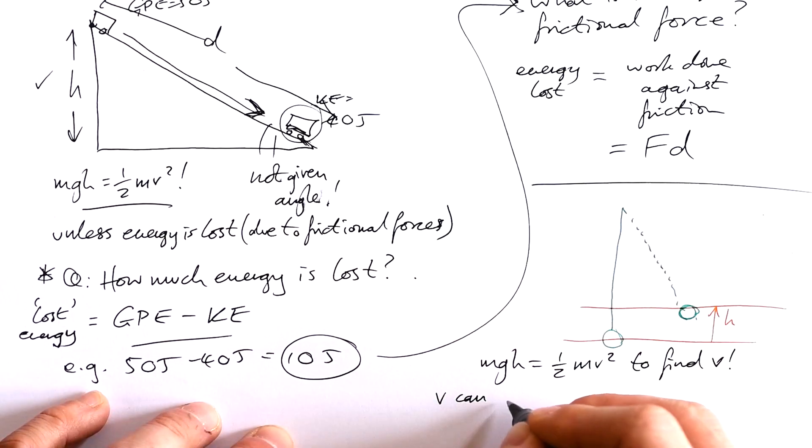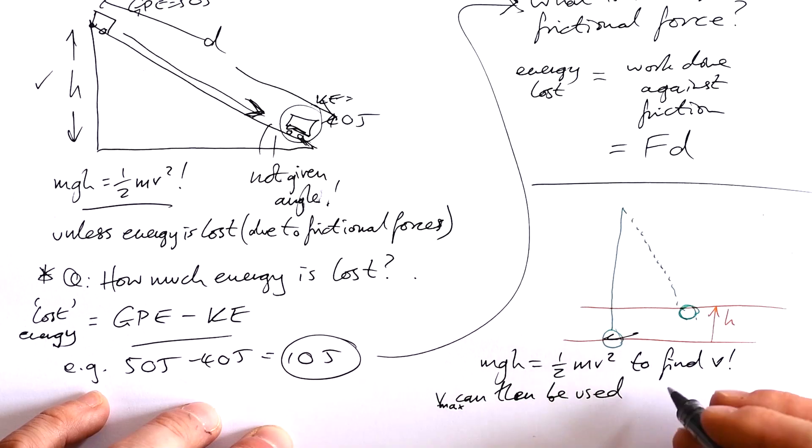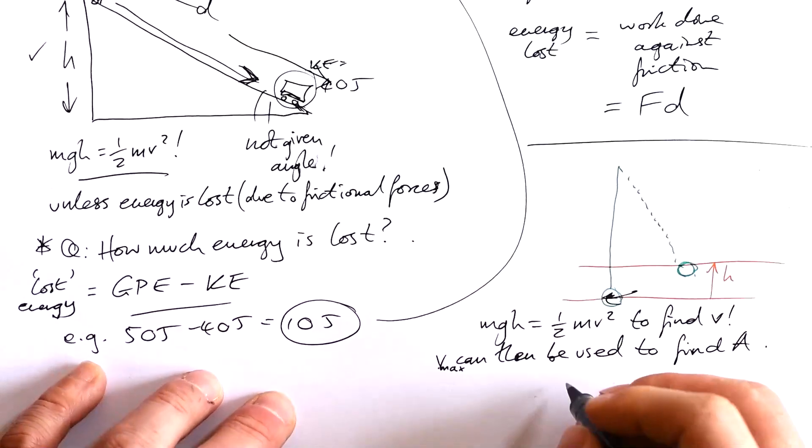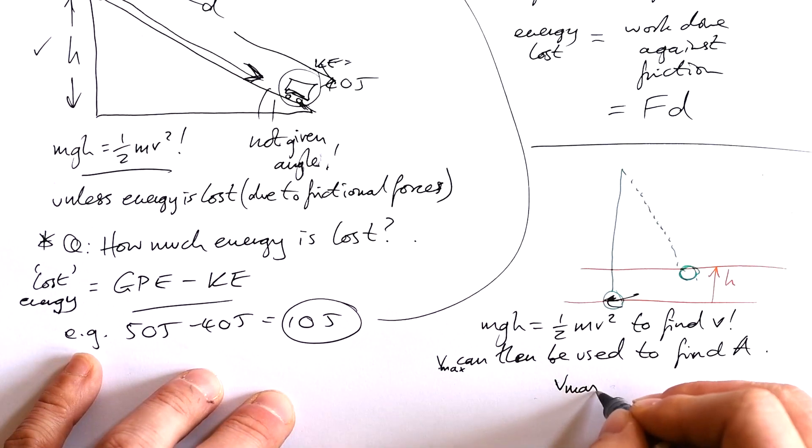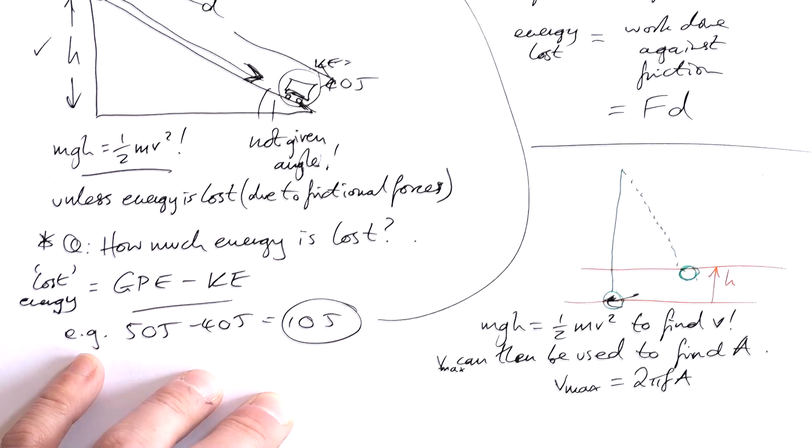V can then be used—and actually it's going to be V max, isn't it, because that's the speed at which it goes through equilibrium with. V max then can then be used to find the amplitude, because as hopefully you know, V max is equal to 2 pi F A. So there we go.